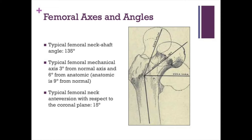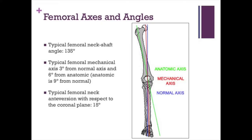As with any topic in orthopedics, the first thing we always have to start off with is anatomy. Much like with total knee arthroplasties, we've got to talk about femoral axes and angles. The typical femoral neck-shaft angle is 135 degrees. Anything greater is coxa valga; anything less is coxa vara. The typical femoral mechanical axis is 3 degrees off the normal axis and 6 degrees from the anatomic axis, making the anatomic axis 9 degrees off the normal axis.